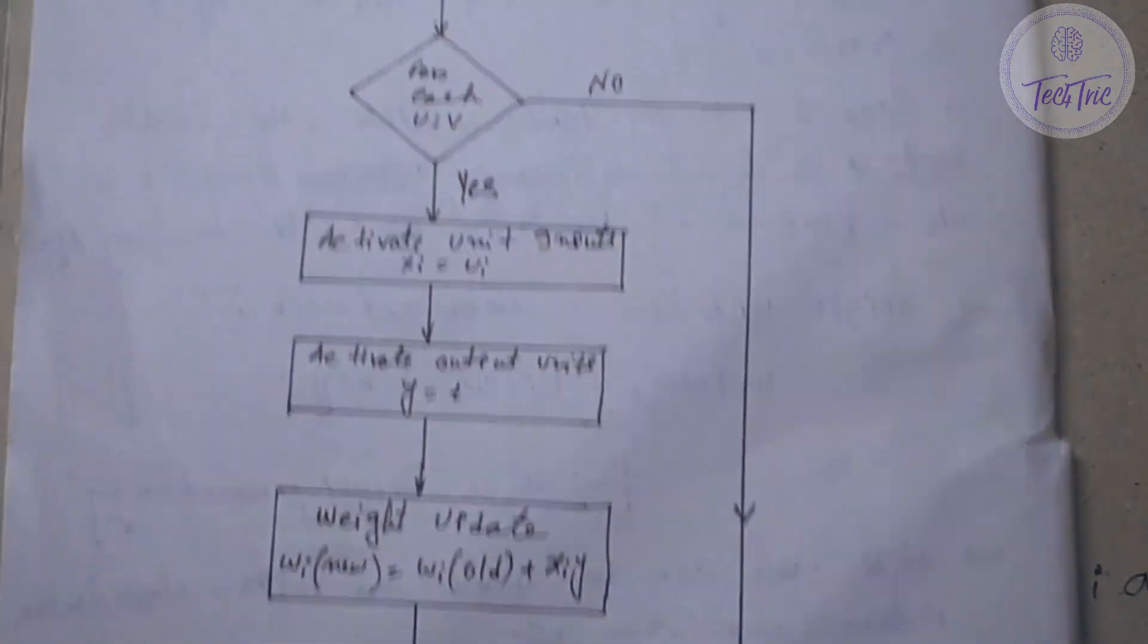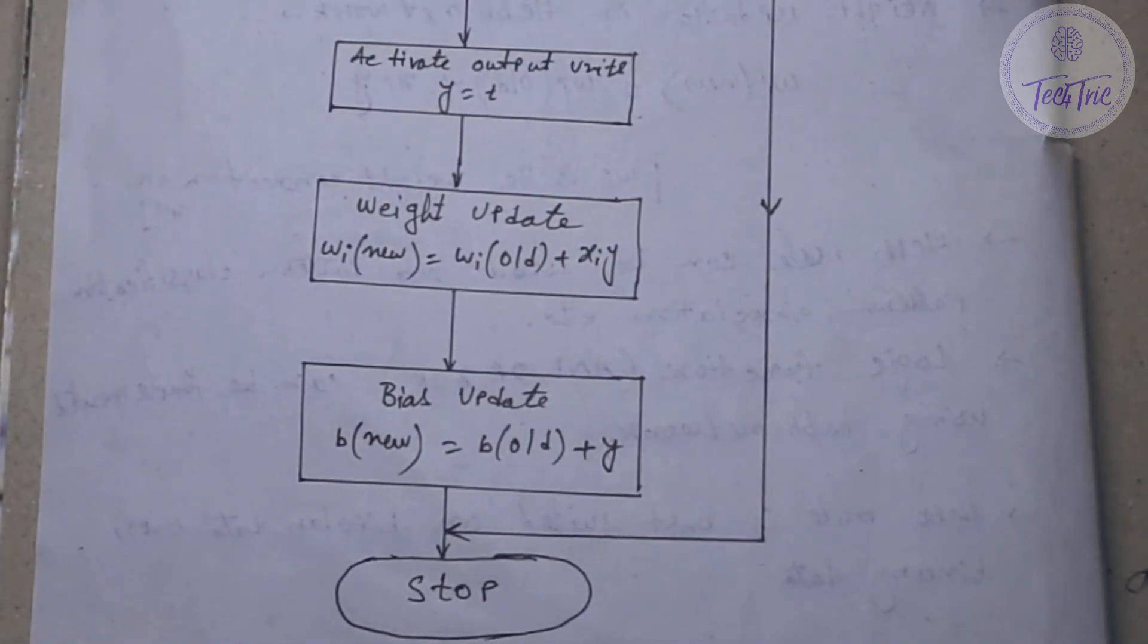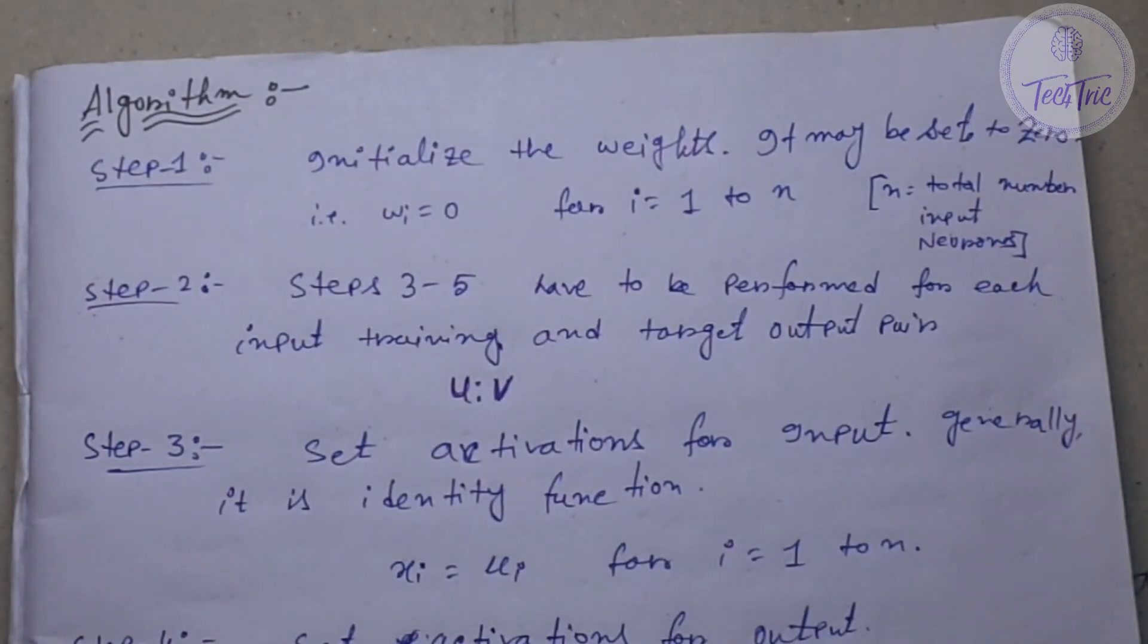Let us see the algorithm now. After watching the flowchart, the algorithm will be simple for you. For step 1, initialize the weights. We may set it to 0, so W_i equals 0, for i equal to 1 to n. n refers to the total number of input neurons.